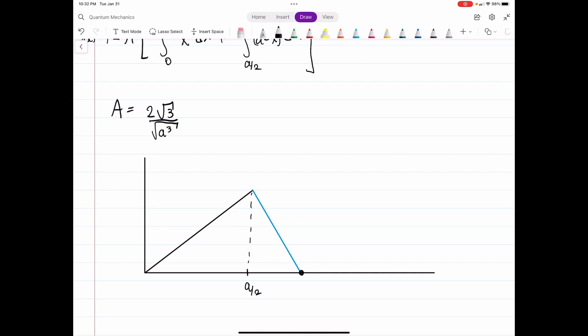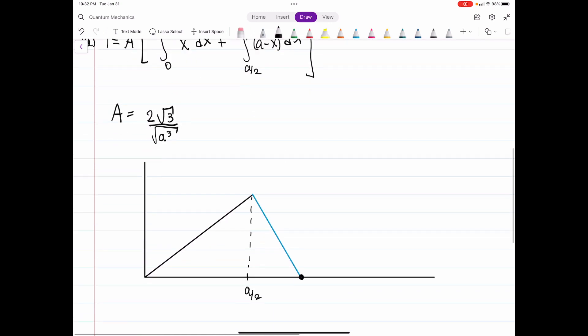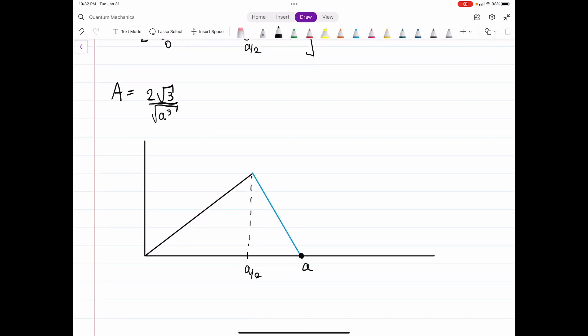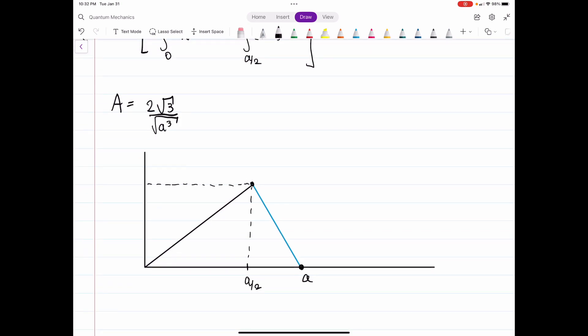And that change, of course, happens at a over 2. And then if you wanted to find this point, of course, you could just set 0 equals a, a minus x. And if you wanted to find what x equals, then x must equal a. So this happens at the point a. You could even find this point if you wanted to, which might have some purpose, but that's essentially what your graph ends up looking like.